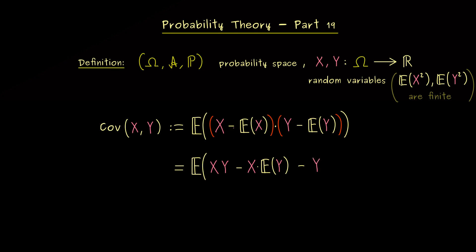And finally, the last term would be plus the two expectations multiplied. So you see, indeed, the same calculation as in part 16.